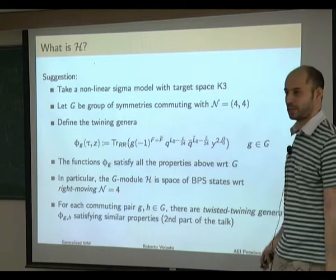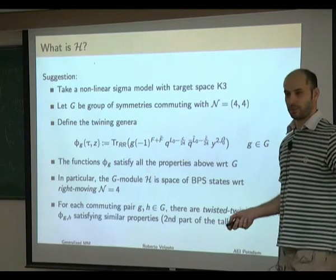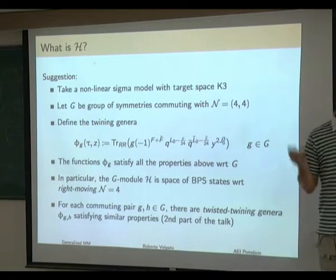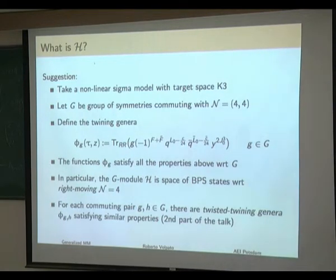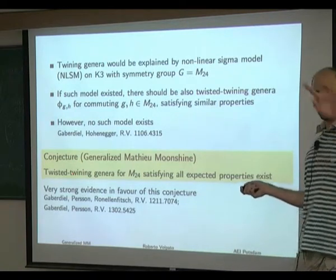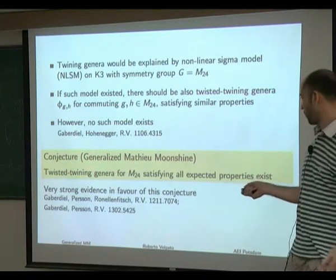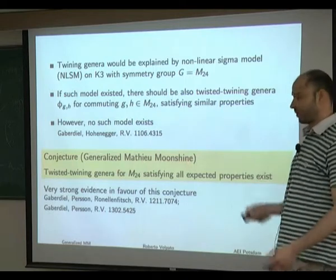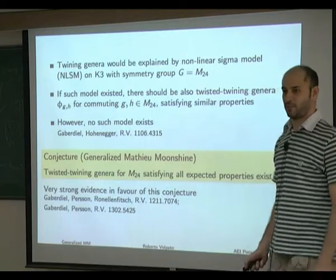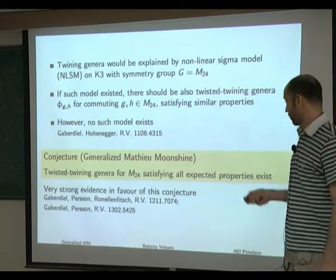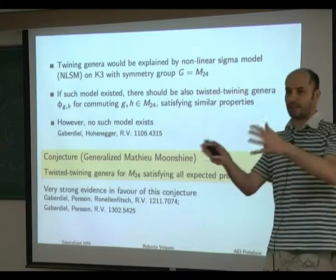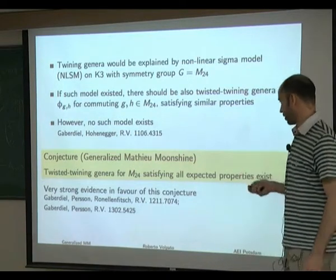These new functions should be weak Jacobi forms under some subgroups of SL(2,Z). It is natural to expect something similar would hold for M24 — this is the basic idea of generalized Mathieu Moonshine. We conjecture that for any commuting pair G, H in M24, there exist twisted twining genera satisfying all expected properties for twining genera in a good conformal field theory. The name comes from the old generalized Monstrous Moonshine proposed by Norton in the 80s; we take the analog of that idea for the Mathieu Moonshine case.